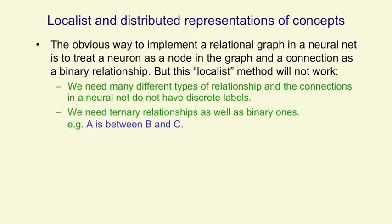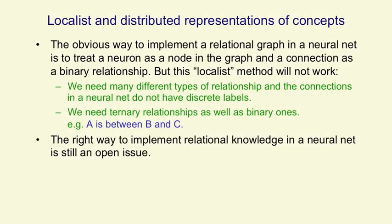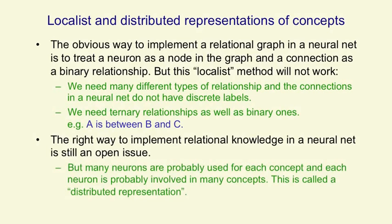We also need to deal with ternary relationships, like 'A is between B and C'. We still don't know for sure the right way to implement relational knowledge in a neural net. But it seems very probable that many neurons are used for representing each of the concepts we know, and each of those neurons is probably involved in dealing with many different concepts. This is called a distributed representation — it's a many-to-many mapping between concepts and neurons.